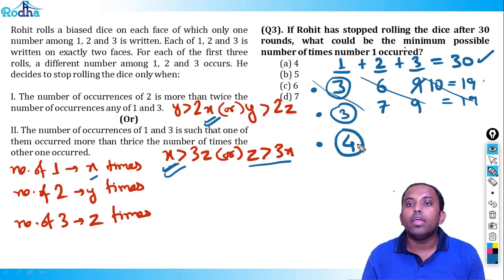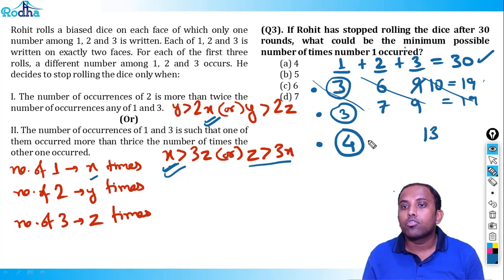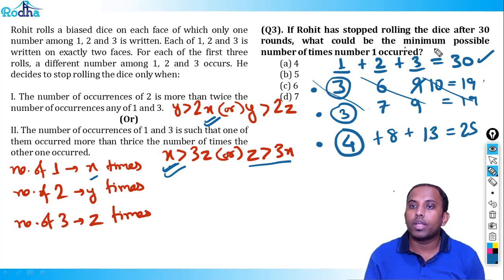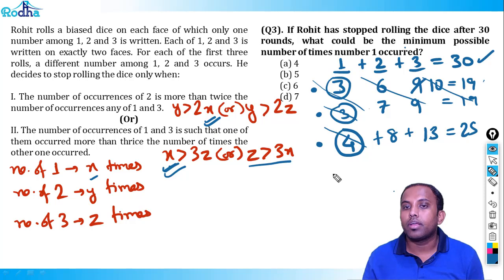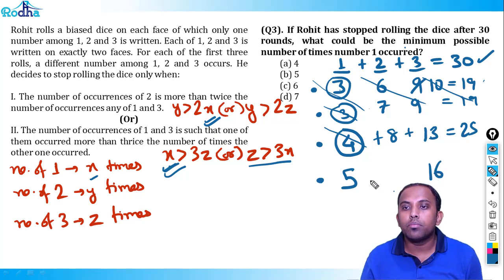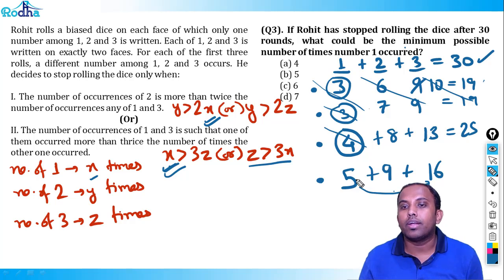Now, for the dice to stop at y = 11, neither condition should have been triggered earlier. For condition 1 (y > 2x or y > 2z) to trigger at y = 11, we need x or z to equal 5, since 11 > 2×5 = 10. Can x or z be 4? If they were 4, dice would have stopped at y = 9 already (since 9 > 2×4 = 8), so y could not reach 11. Hence x and z must each be at least 5.